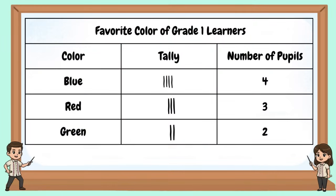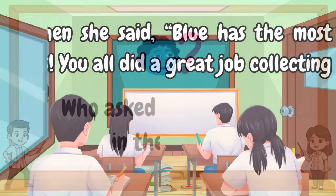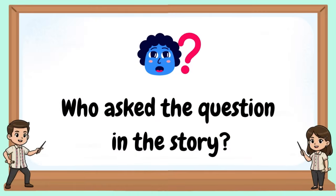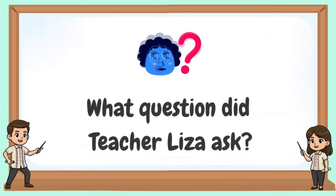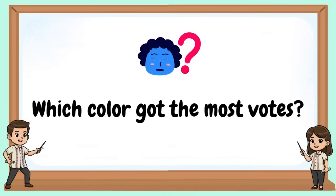In this table — favorite color of Grade 1 learners — four pupils like blue, three pupils like red, and two pupils like green. Blue has the most votes. Who asked the question in the story? What question did Teacher Lisa ask? What were the color choices? Which color got the most votes?